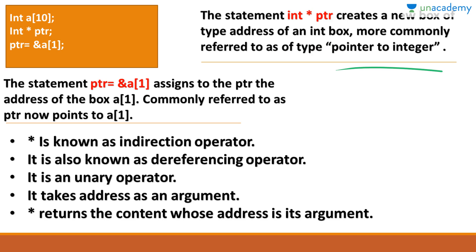Here we have defined a variable asterisk pointer, and PTR is equal to address of a[1]. We have defined array a of size 10, and in PTR we are storing the address of a[1]. a[1] means index 1 of array a. So the statement PTR = &a[1] assigns to PTR the address of box a[1], commonly referred to as PTR now points to a[1].